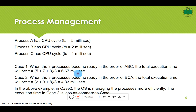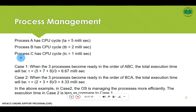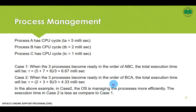In Case 2, if our operating system is smart enough to process these processes in a very efficient sequence — when processes become ready in the order B, C, A — the computer executes 2ms for process B, then 1 more ms for C giving total 3ms, then 5 more ms for A giving total 8ms. Summing all three and dividing by total numbers gives 4.33ms — a very efficient allocation of resources to these processes.